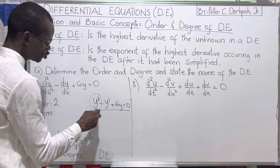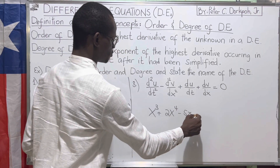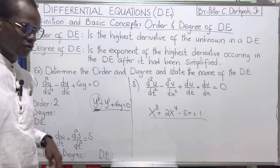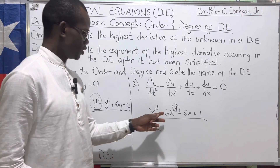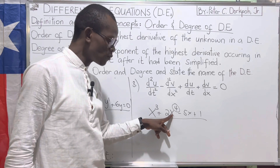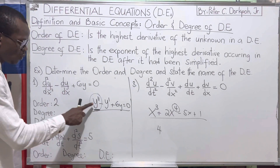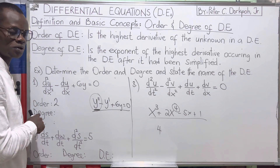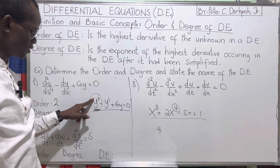Now, since the order is 2, think of it like a polynomial: x³ + 2x⁴ − 5x + 1. If you ask what is the highest power, we say the highest power is 4. The term 2x⁴ is the leading term, and the coefficient of that variable is the leading coefficient. Similarly, since y double-prime is the term with the highest derivative — which we refer to as the highest order — we now think about finding the power to which this highest derivative is raised.